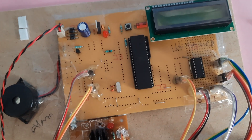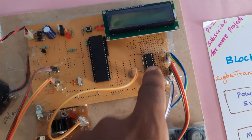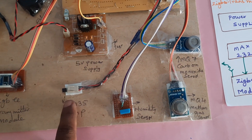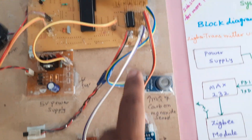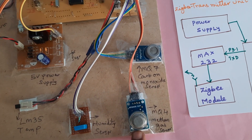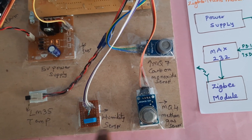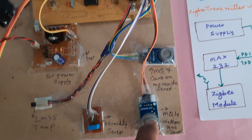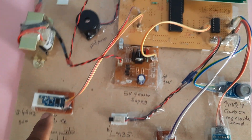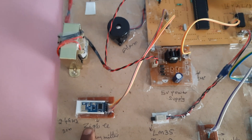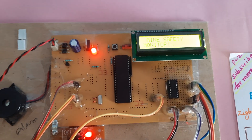The 8051 S52 microcontroller, 16x2 LCD display, and MCP3208 ADC are used. The LM35 temperature sensor is on channel 0, humidity sensor on channel 1, MQ4 methane sensor on channel 2, and MQ7 on channel 3. These are all connected to the ADC, which connects to the microcontroller, along with the Zigbee transmitter-receiver module. Now I am going to give the power supply.